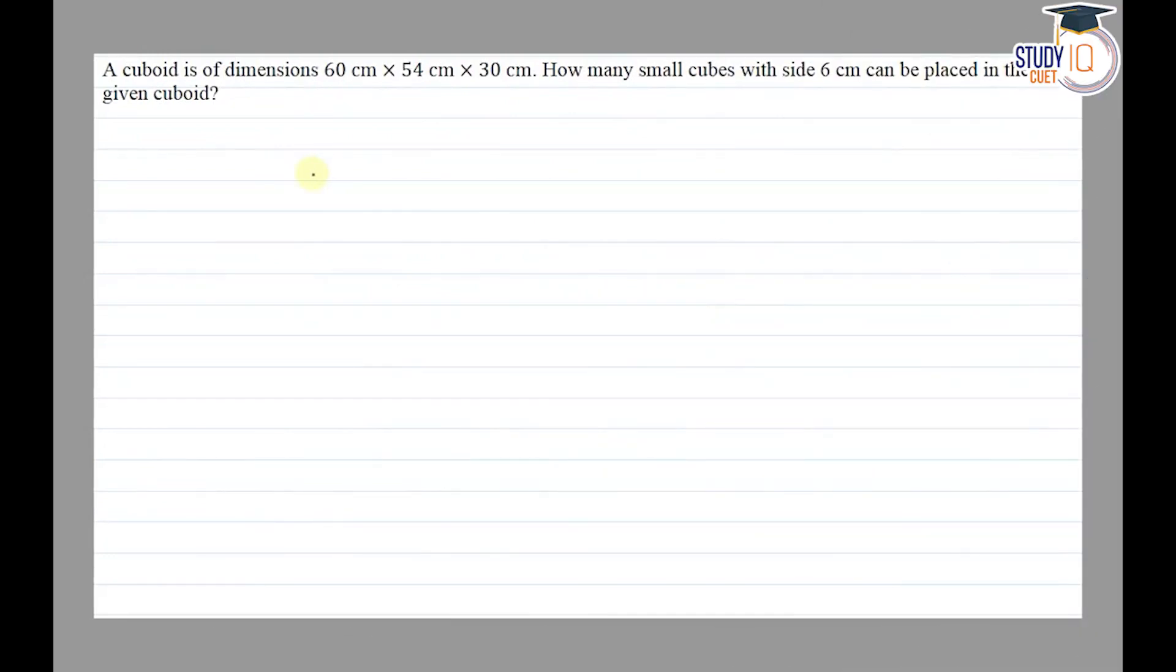Hello everyone, this question appears in class 8th NCERT chapter on mensuration. This is the fourth question of exercise 11.4. The question says that a cuboid is of dimensions 60 centimeter by 54 centimeter by 30 centimeter. How many small cubes with side 6 centimeter can be placed in the given cuboid?